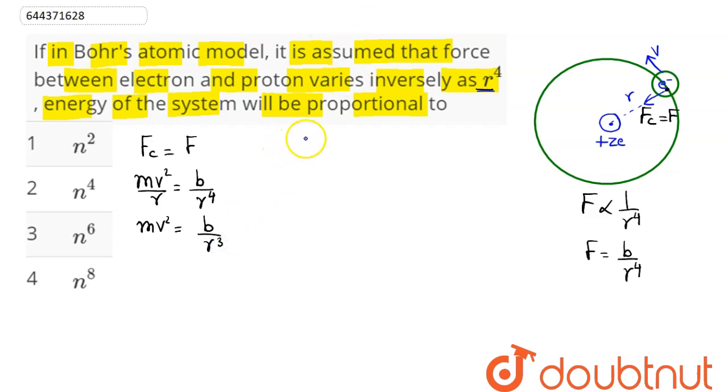Now we know according to Bohr's third postulate, angular momentum of this electron shall remain conserved, which is equal to integral multiple of h divided by 2 pi. Hence mvr equal to nh by 2 pi. Now on squaring both sides...